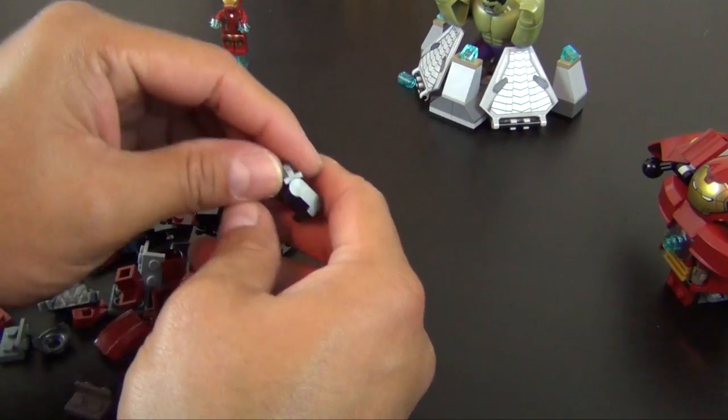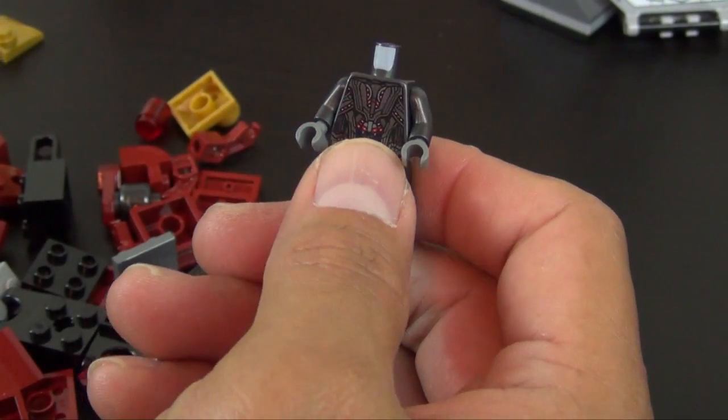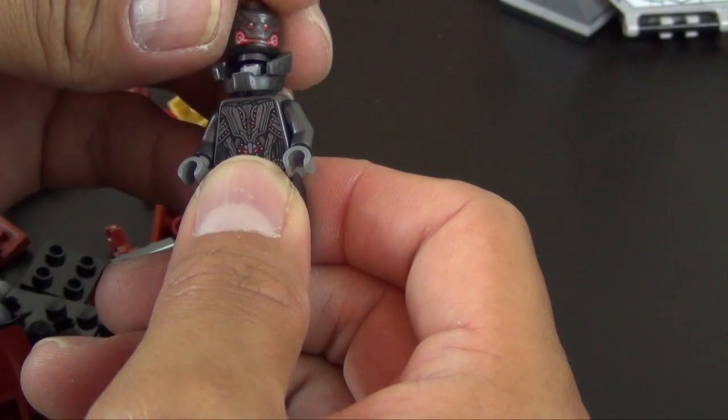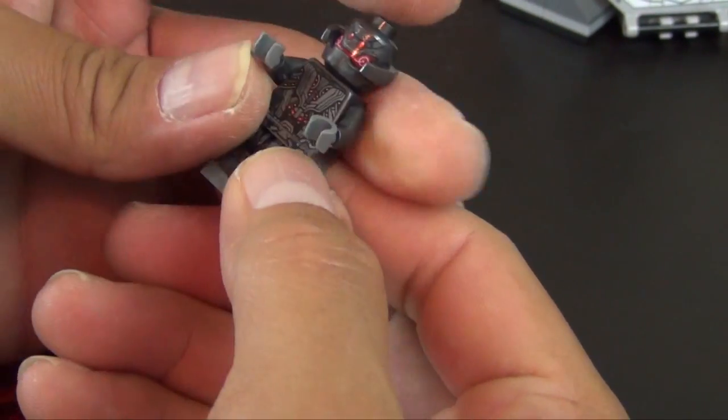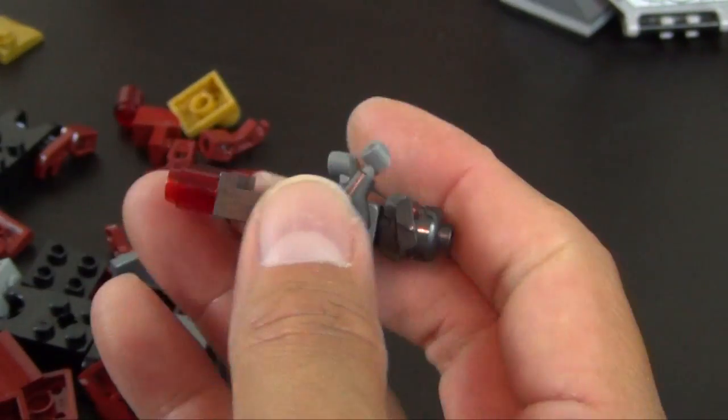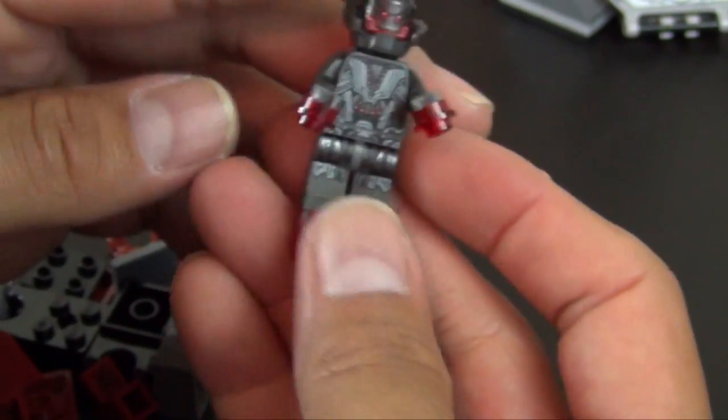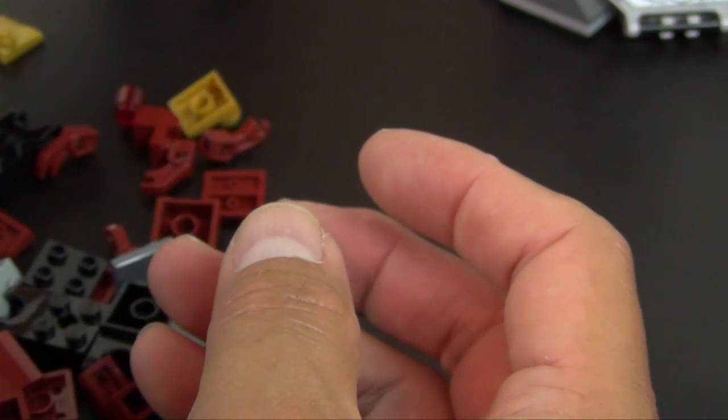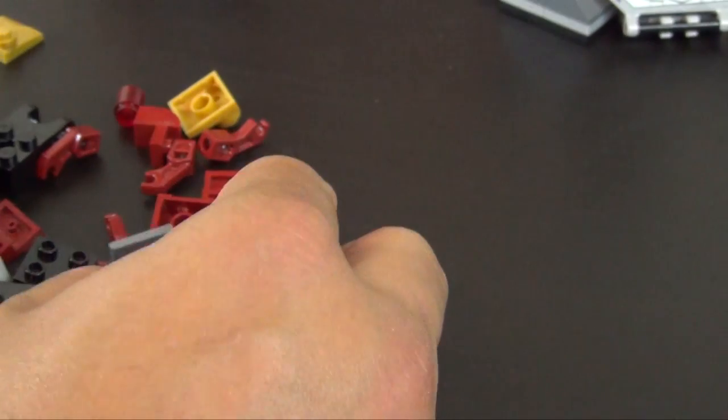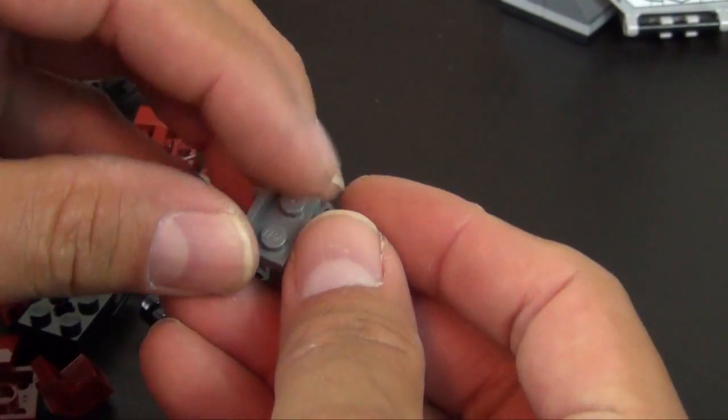Okay, so we're in our final bag. We are going to build our final minifigure, which is the Ultron Prime. Legs, torso, we have this neck piece that goes on, and then the head. There's all the rocket boosters. Put him over there next to Iron Man. So we're going to build the legs now for the Hulk Buster. Let's start with some brackets.